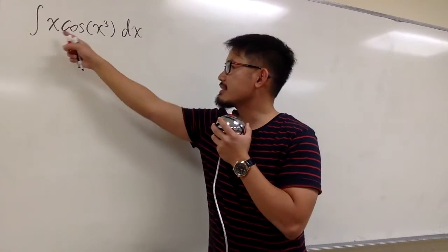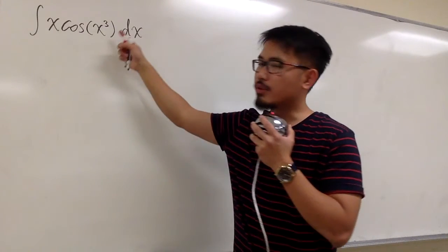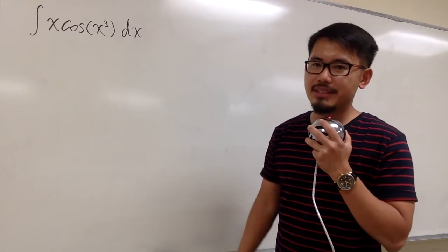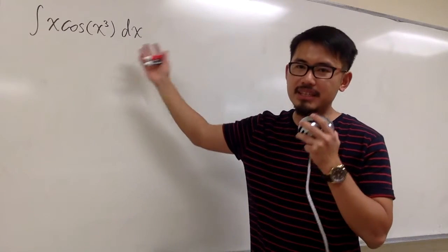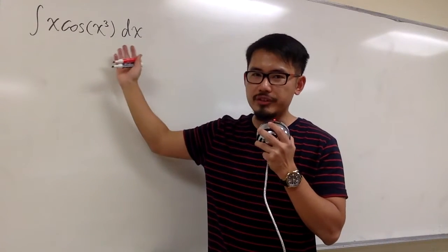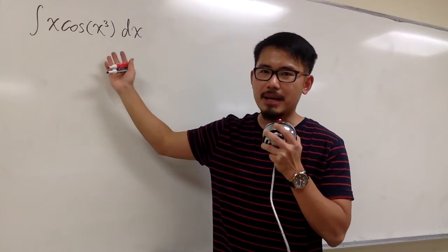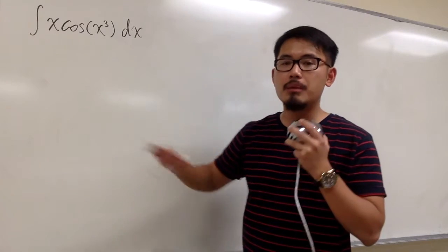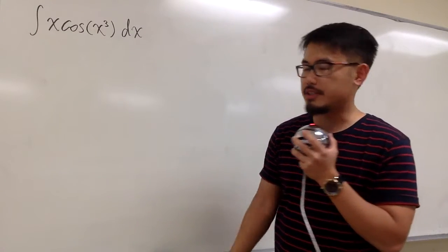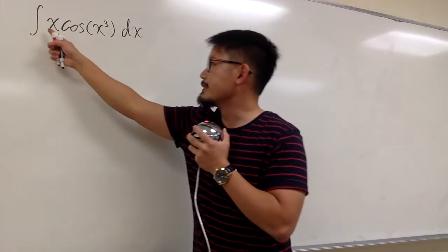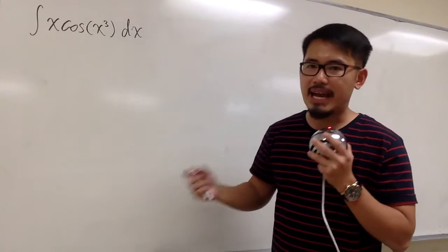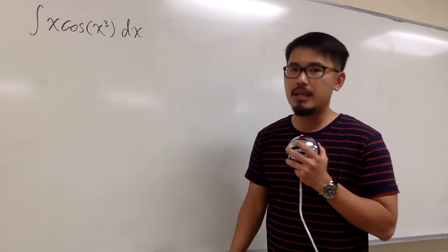We are going to integrate x times cosine of x to the third power dx as an infinite series. Unfortunately, none of the integration techniques that we've done in the past will work. But the strategy now is: we will first come up with an infinite series for this, and then integrate that infinite series.